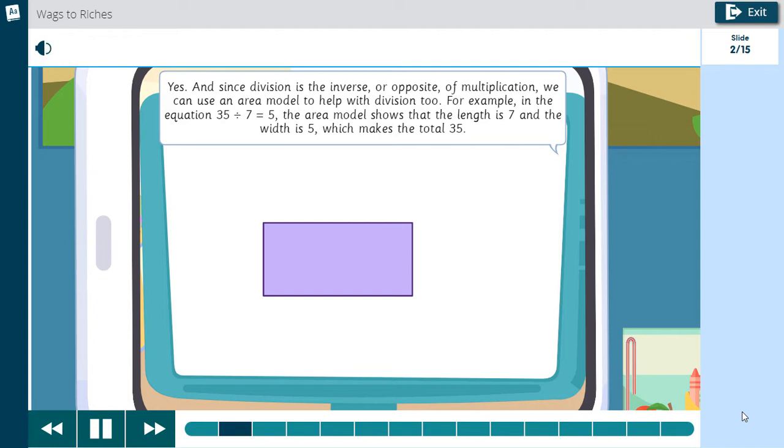For example, in the equation 35 divided by 7 equals 5, the area model shows that the length is 7 and the width is 5, which makes the total 35.